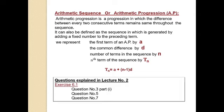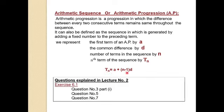In arithmetic progression, we denote the first term by small a, the common difference between the terms is denoted by small d, the number of terms in the sequence is denoted by small n, and the nth term of the sequence is denoted by tn. The formula for the nth term is tn equals a plus n minus 1 into d.